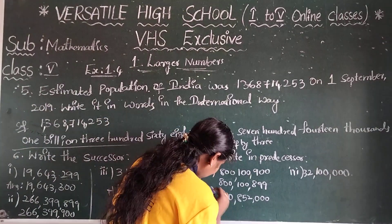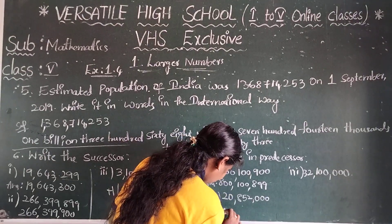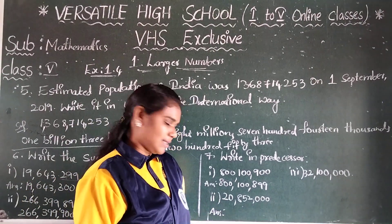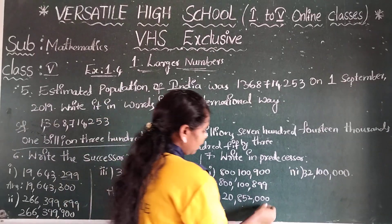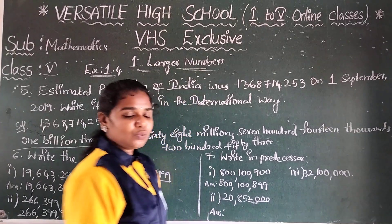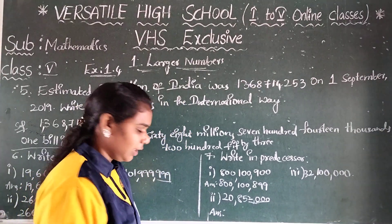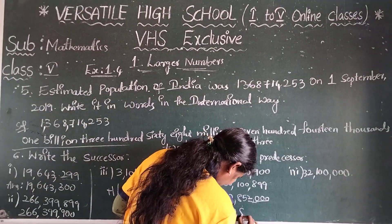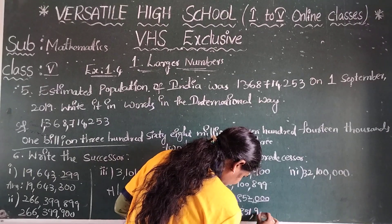Next, the second number: 20,152,000. Write the number before. The last three digits are zeroes, so look at the four-digit number 2000. Before 2000 is 1999. So the answer is 20,151,999.